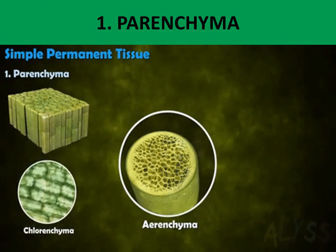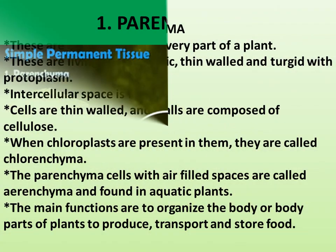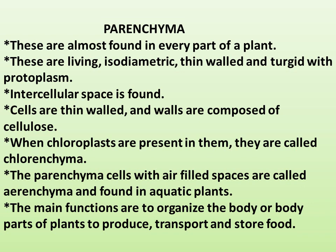Parenchyma: these are found in almost every part of a plant. They are living, isodiametric, thin-walled, and turgid with protoplasm. Intercellular spaces are found, and cell walls are composed of cellulose. When chloroplasts are present in them they are called chlorenchyma. Parenchyma cells with air-filled spaces are called aerenchyma and are found in aquatic plants. Main functions are to organize the body of the plant and to produce, transport, and store food.